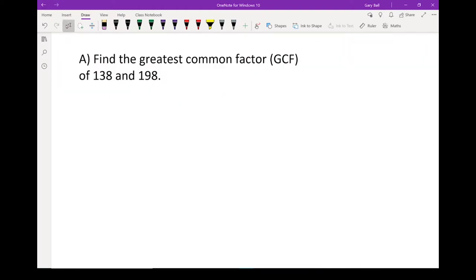So here I've got two numbers, 138 and 198. Let's find the greatest common factor of those two numbers. To find that greatest common factor, I'm actually going to break it down into its prime factors. Let's do a prime factorization first.